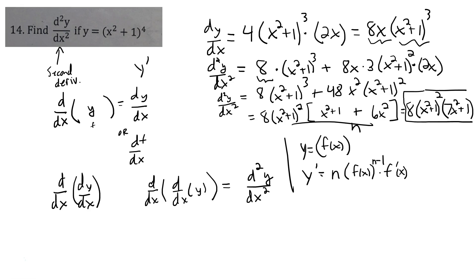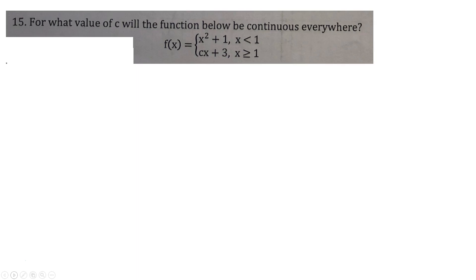Sorry if I went kind of fast there. Hopefully you can go back and make sure you can follow. Let's look at the next question, too, while we're at it here. And this is a continuity question. A continuous function is one that has no breaks in it. And x squared plus 1 is a parabola. It has no breaks in it. Cx plus 3 is a line. It has no breaks in it. But what this function is is a piecewise function.